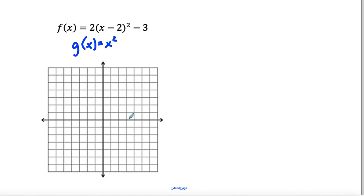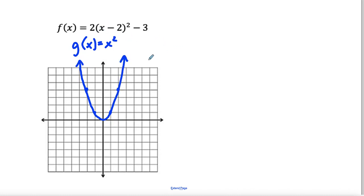So x squared — let's go ahead and graph that original function. x squared is going to look like this: one squared is one, two squared is four, negative one squared is one, negative two squared is four. So I'm going to go ahead and graph the original here. It goes through (0, 0). Now we can look at the transformations on our f(x) function.